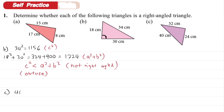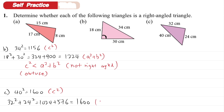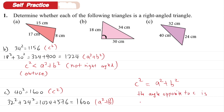Now look at Example C. We calculate 40 squared to get 1600. Then 32 squared plus 24 squared gives 1024 plus 576, which totals 1600. C squared equals A squared plus B squared! So here we are using the Converse of Pythagorean Theorem: when C squared equals A squared plus B squared, the angle opposite to C is a right angle - 90 degrees.